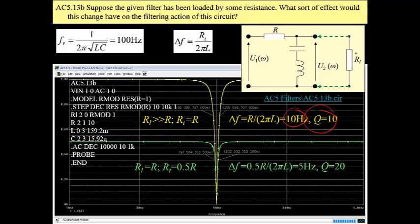For load resistance being the same as R, being 10 ohm, we have a quality factor even greater and we have a bandwidth which is half of the bandwidth that we had before, which is 5 Hz now.